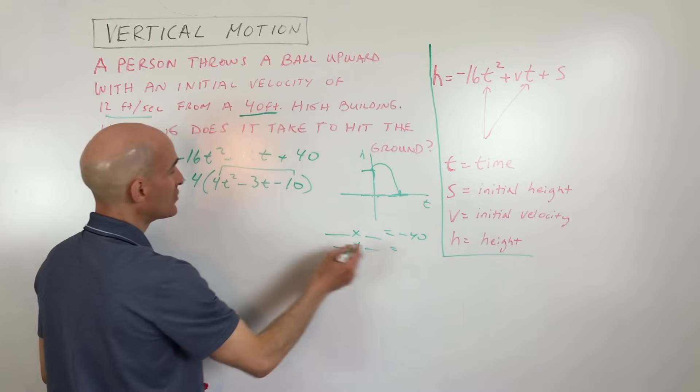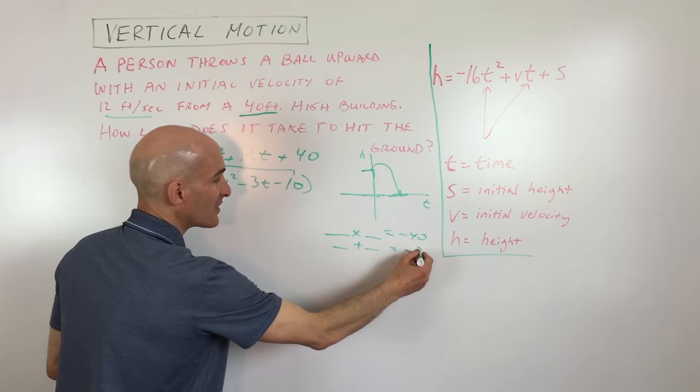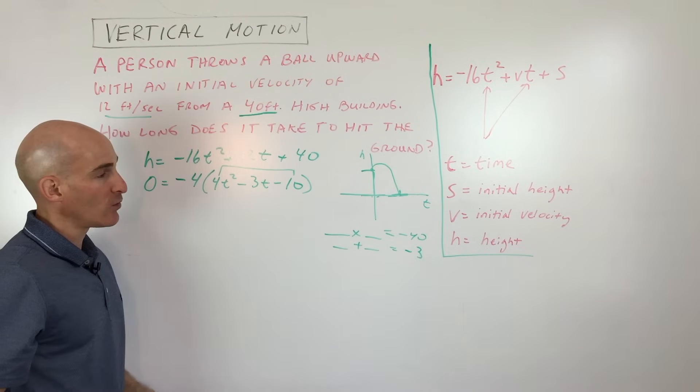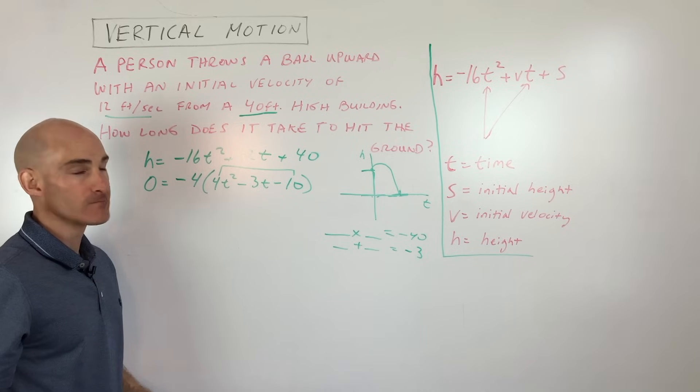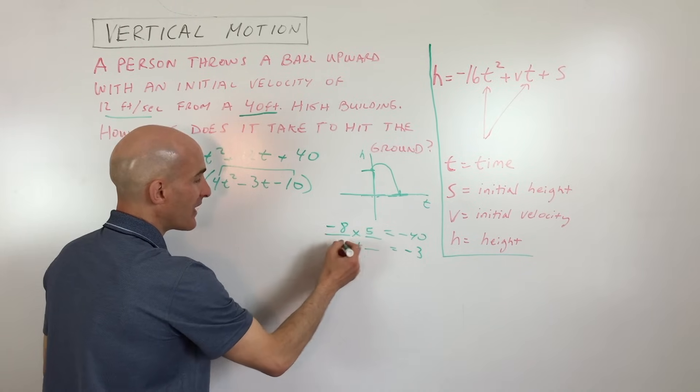What two numbers multiply to negative 40, but at the same time those two numbers have to add to the middle coefficient, negative 3. So what would that be? It's going to be negative 8 and positive 5.